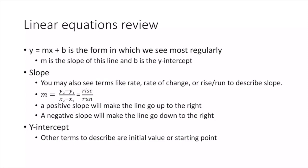Here is the equation for the slope where we are given two points: y₂ minus y₁ over x₂ minus x₁. A positive slope will make the line go up to the right, and a negative slope will make it go down to the right.